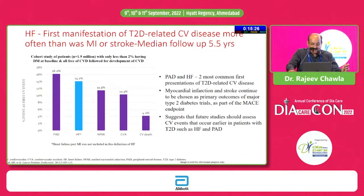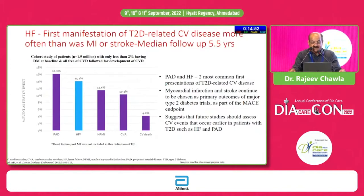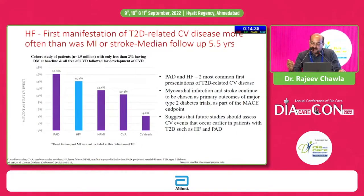We have always ignored heart failure, but today we understand heart failure is the first manifestation of type 2 diabetes. It is related to CVD and comes much earlier than MI or stroke — as early as within five years. A cohort study of 1.9 million patients followed for a mean duration of 5.5 years — only 2% had diabetes at enrollment and all were free of CVD — showed that PAD and heart failure were the two most important first manifestations, appearing within six years, earlier than myocardial infarction and stroke.